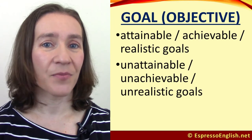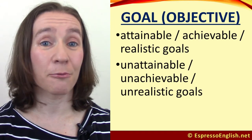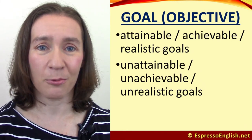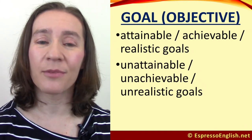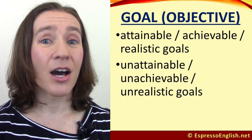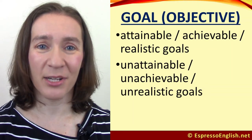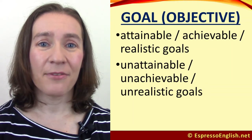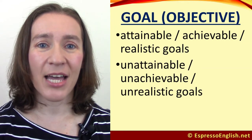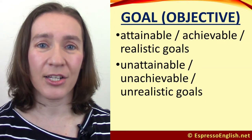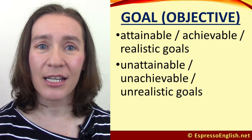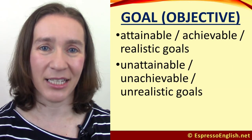We also have the collocations attainable, achievable, and realistic goals. If it is possible for a goal to be reached, we describe it as attainable, achievable, or realistic. On the other hand, we have unattainable, unachievable, and unrealistic goals. If it is impossible or extremely difficult, a goal can be described as unattainable or unachievable. An unrealistic goal is not impossible, but it will be extremely difficult and not very likely.